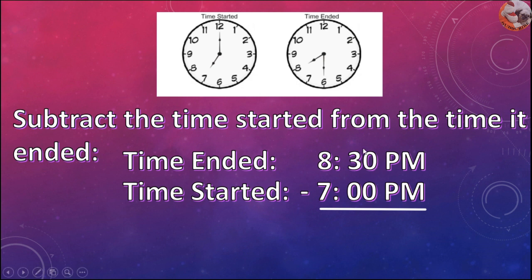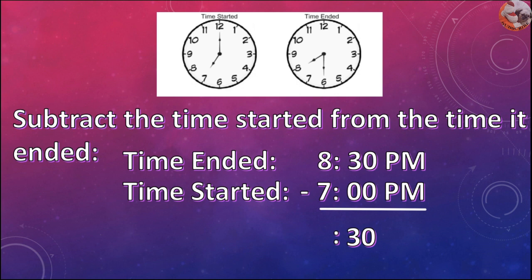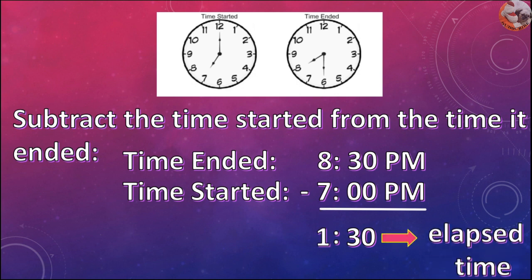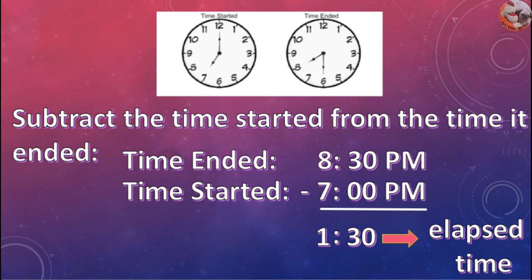So, starting from here: 0 minus 0 is 0, 3 minus 0 is 3, then 8 minus 7 is 1. So, 1 hour and 30 minutes is the elapsed time.